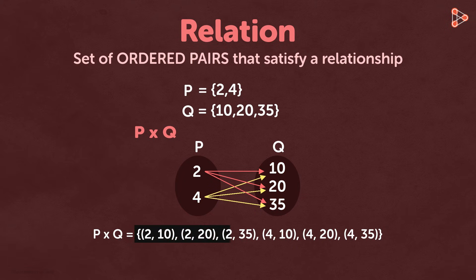We get 6 ordered pairs of the form P comma Q, where every P belongs to set P and every Q belongs to set Q. That's how it can be written in the set builder form.